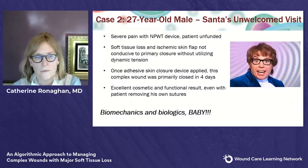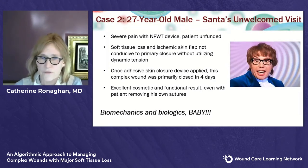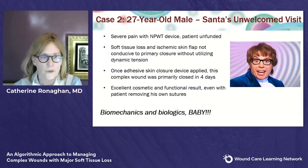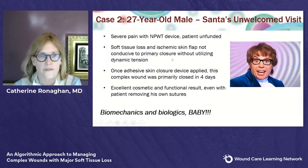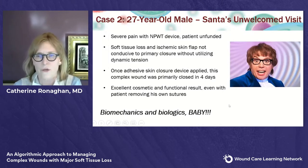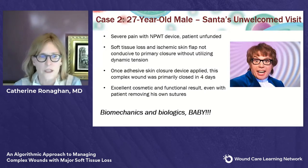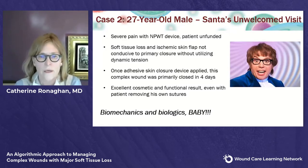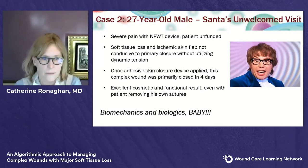To sum up this case: the fellow was already in a negative pressure wound therapy device but having severe pain and was also unfunded. He had significant soft tissue loss and quite a large ischemic flap. I did not think that was conducive to primary closure without utilizing dynamic tension first. Once we got the adhesive skin closure device applied, we were able to definitively close him in four days — with an amazingly excellent cosmetic and functional result considering his initial presentation. As Austin Powers would say, it's all about biomechanics and biologics, baby.